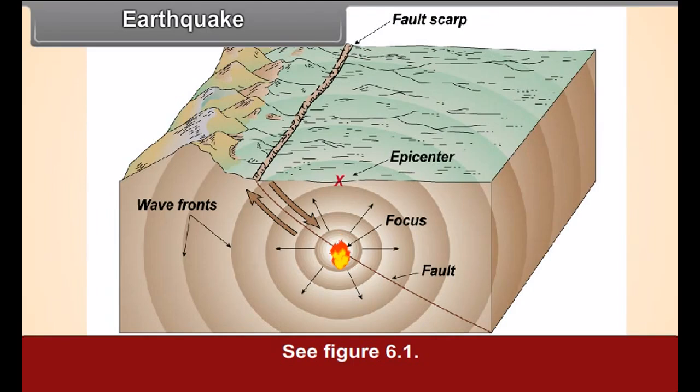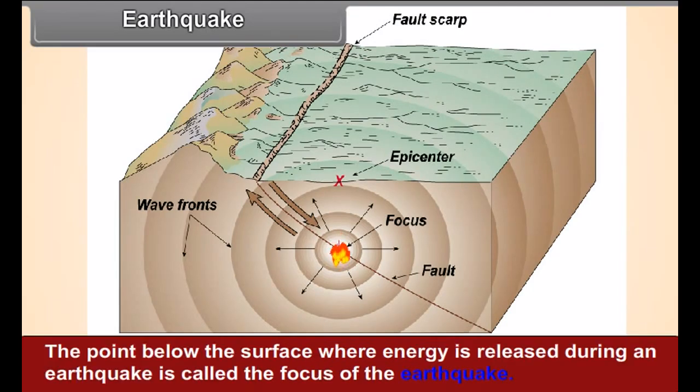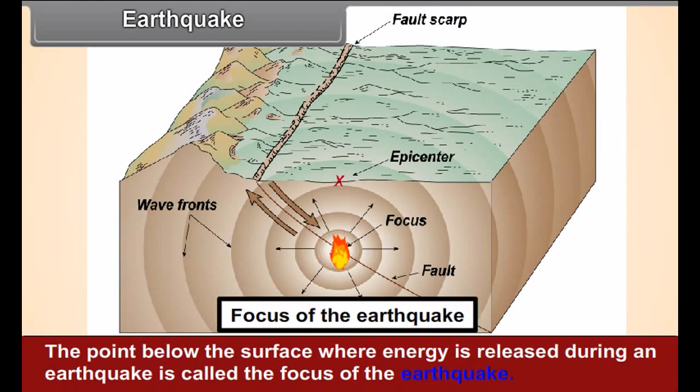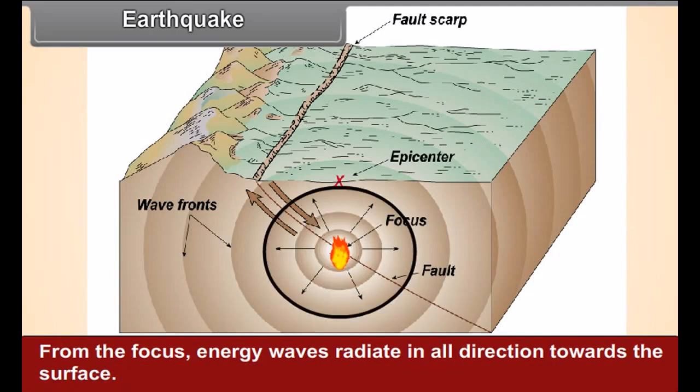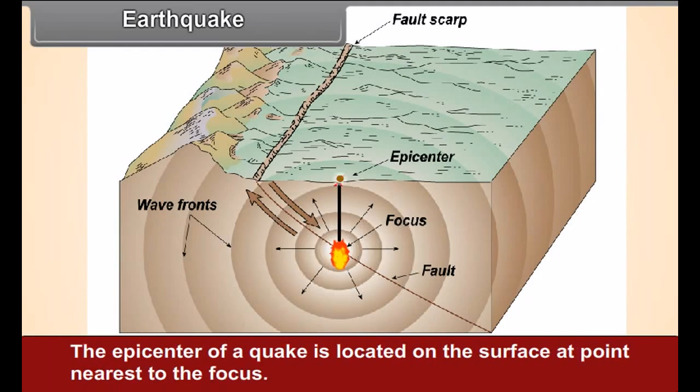See figure 6.1. The point below the surface where energy is released during an earthquake is called the focus of the earthquake. From the focus, energy waves radiate in all directions towards the surface. The epicenter of a quake is located on the surface at point nearest to the focus.